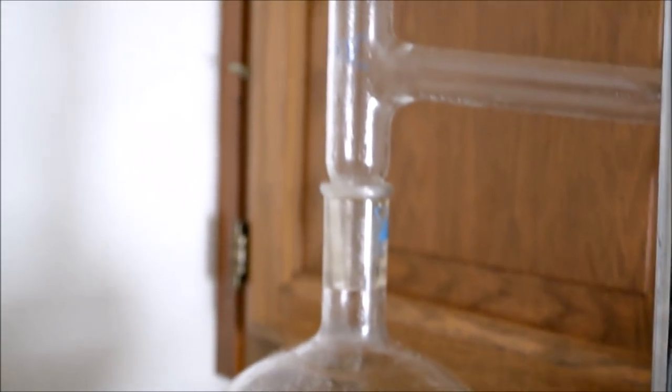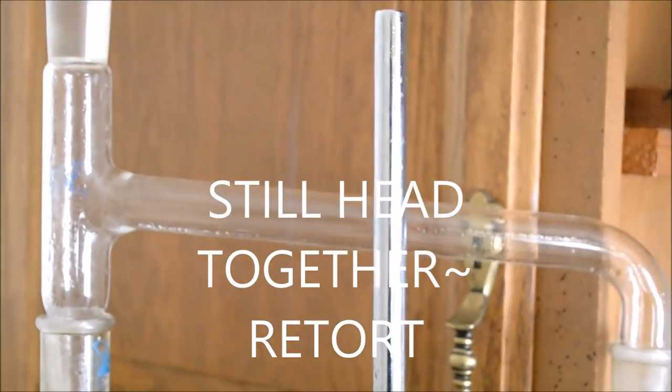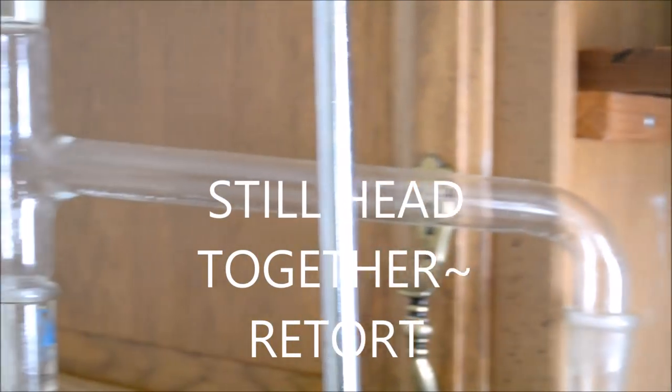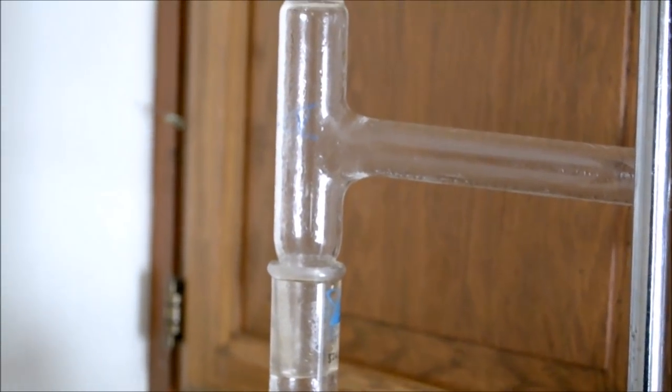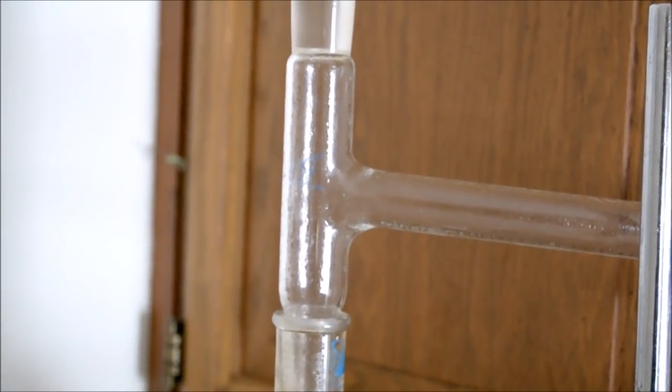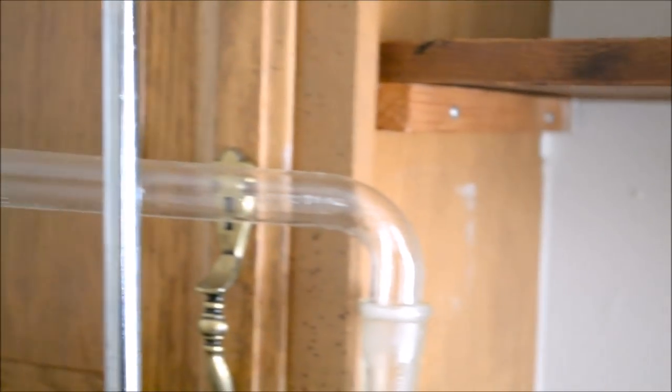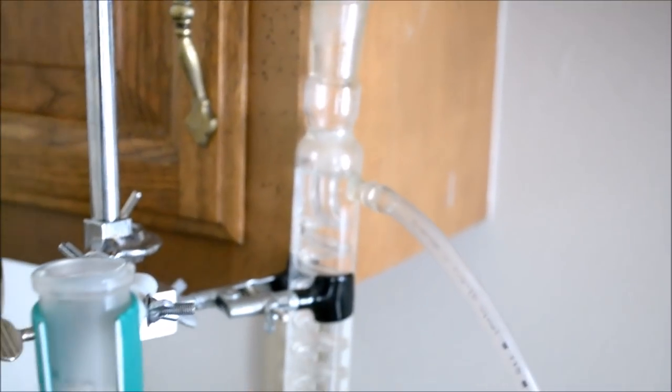Following up the reservoir flask, you come to what's known as the distilling arm or the still head. A couple different names, but essentially this is a key component to connect the reservoir flask to one of the most unique parts of the system: the condenser.